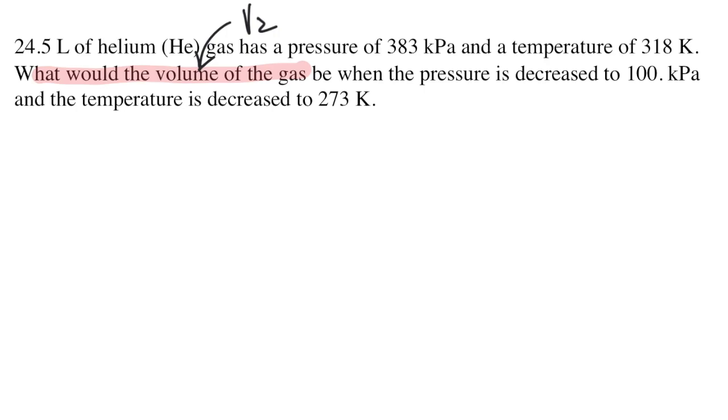Next, I'm going to use green to highlight the given information. The starting conditions are given first. There are 24.5 liters of helium gas. That's V1. That's the starting volume and it's at a pressure of 383 kilopascals. That's P1 and a temperature of 318 Kelvin. So that's T1.